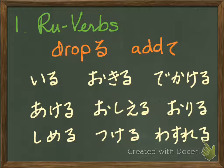The following are ru-verbs: iru (to exist), okiru (to get up), dekakeru (to go out), akeru (to open), oshieru (to teach), oriru (to get off), shimeru (to close), tsukeru (to turn on), and wasureru (to forget). These are ru-verb examples.